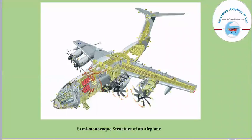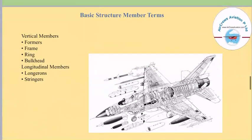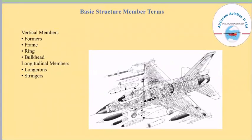Here is a picture of the semi-monocoque structure of an airplane, with areas highlighted in yellow and red. Moving further, the basic structural member terms include: vertical members — formers, frames, rings, and bulkheads; and longitudinal members — longerons and stringers.